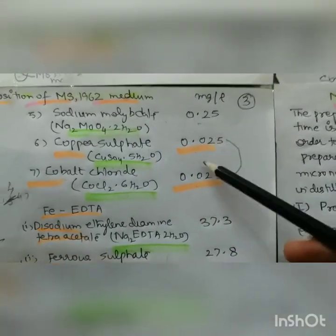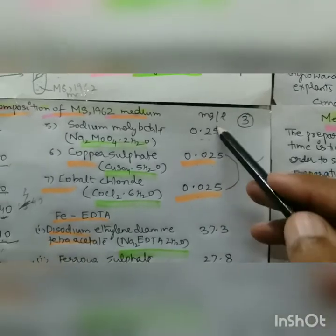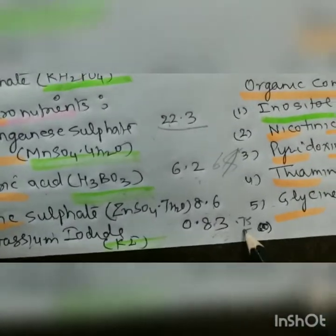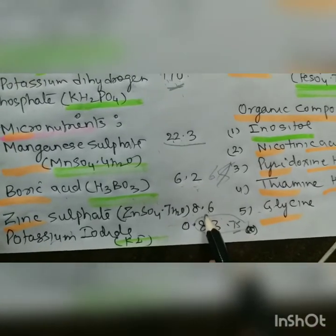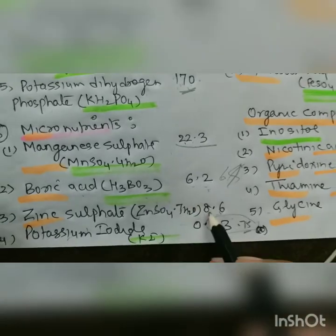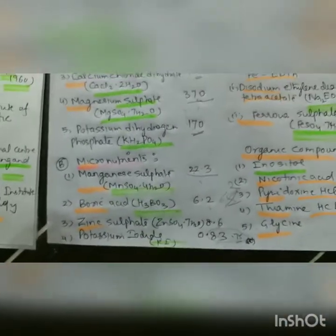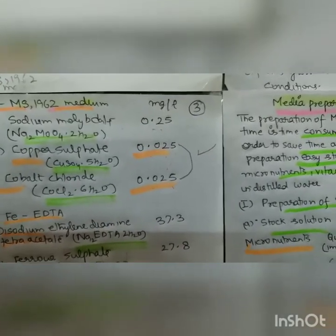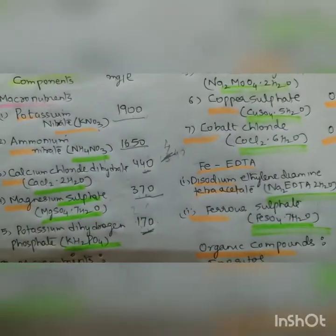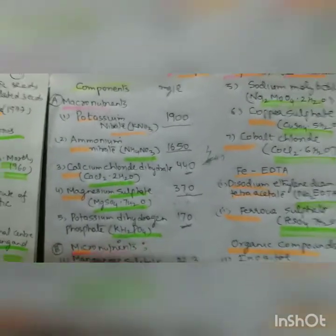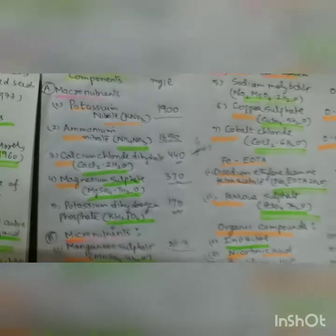Memory trick for micronutrients: start with the smallest — cobalt chloride and copper sulfate are both 0.025. Then sodium molybdate is 0.25. Their total is 0.75, but here we have 0.83 for potassium iodide. Zinc sulfate gives 8.3 by pattern but autocorrects to 8.6; reverse 8.6 to get 6.8, which autocorrects to 6.2 for boric acid. The last to remember is 22.3 for manganese sulfate. Do it three times in 48 hours and it will imprint on your memory.